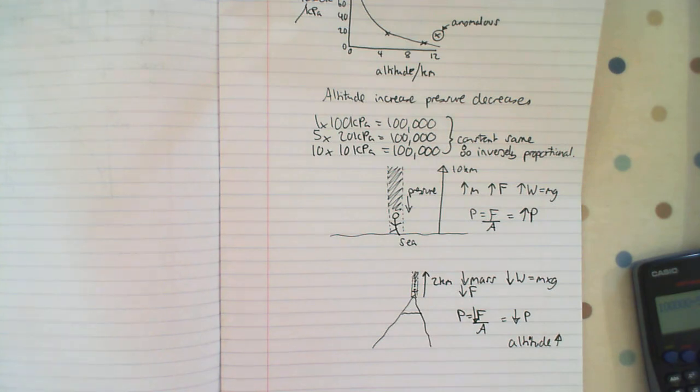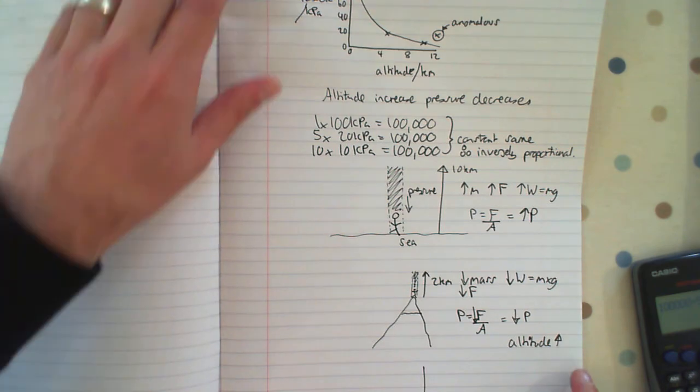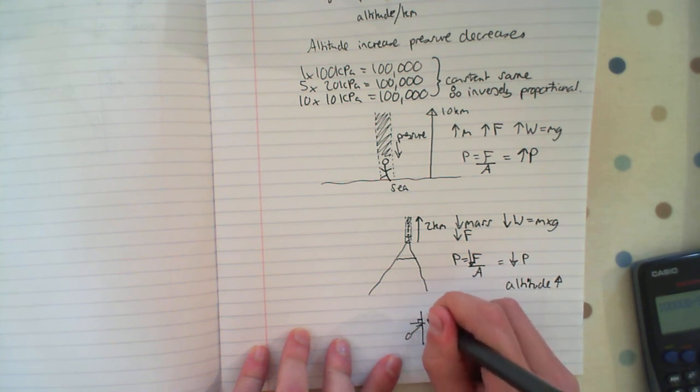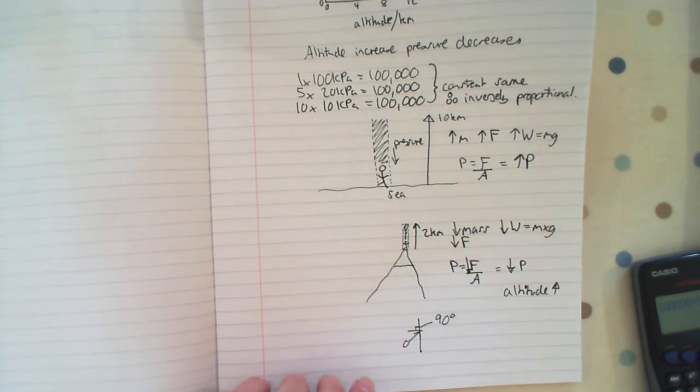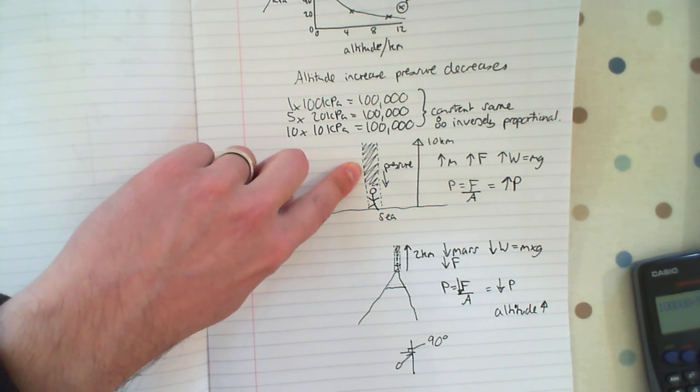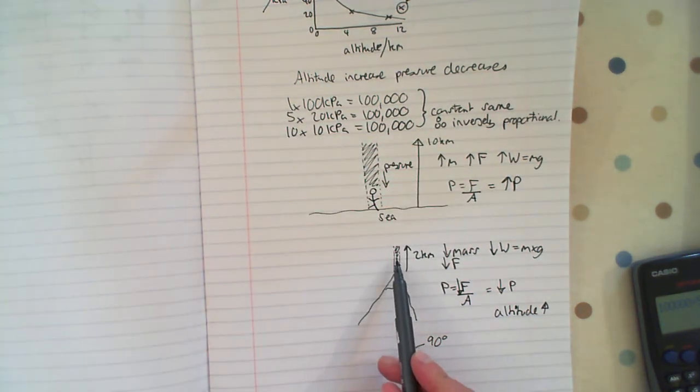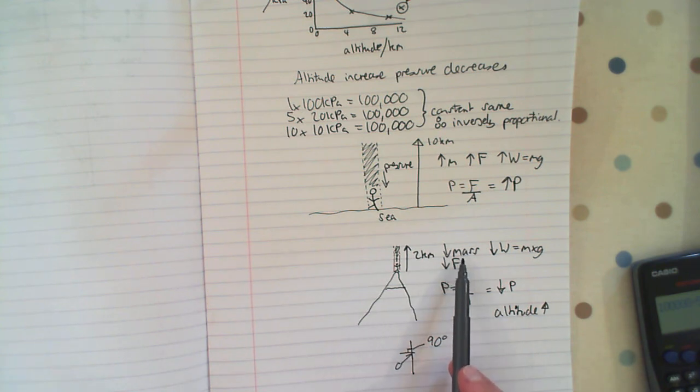Don't forget that pressure is caused from gas particles colliding at 90 degrees. So the gas particle collides, produces a force at 90 degrees. This is the same for these scenarios as well. The greater the column of air above, the greater the mass, the greater the weight, the greater the force, the increased pressure. The lesser the column of air above, decreased the mass of air above, which decreases the weight, which decreases the force. If we decrease the force, we decrease the pressure as altitude increases.